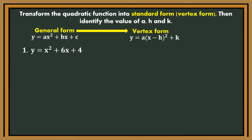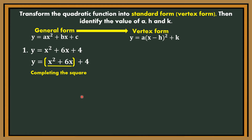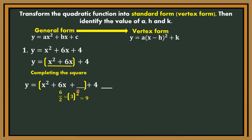Let's have number 1. We're going to transform it into vertex form. First, we're going to group the first term and the middle term. Then, for x squared plus 6x, we're going to use completing the square to get a perfect square trinomial to obtain the (x minus h) squared form. We have a missing number here and at the end. To get the missing number, take the numerical coefficient of the middle term, that is 6. Divide by 2 — the answer is 3. Then square it — the answer is 9. Place plus 9 here.